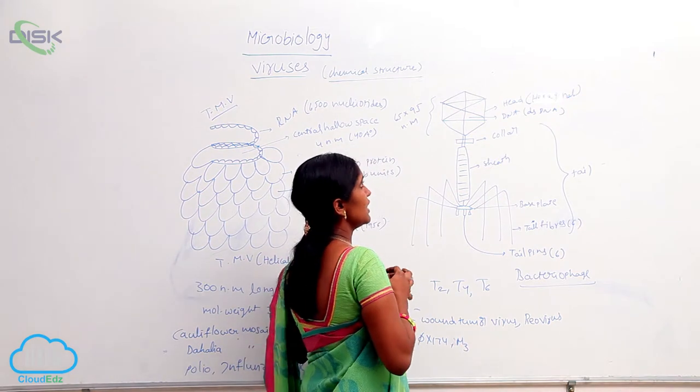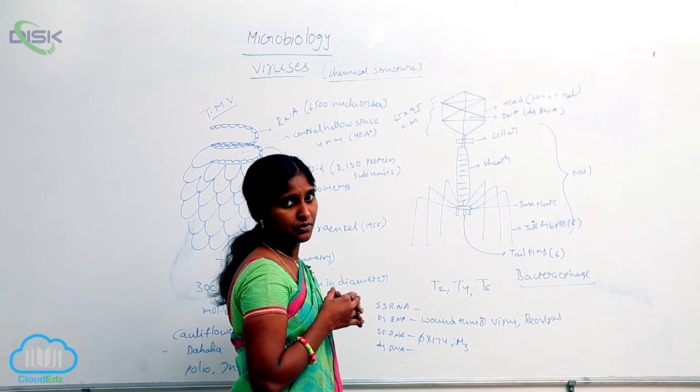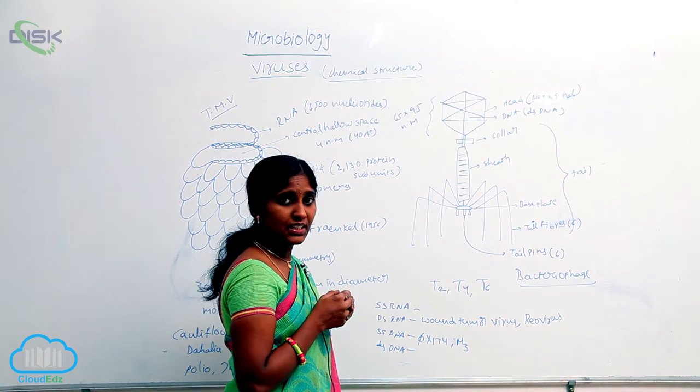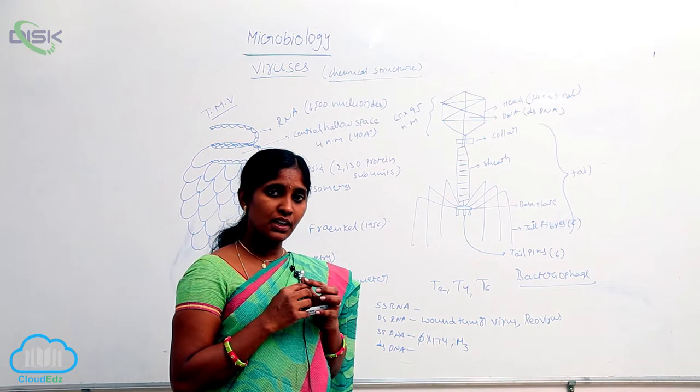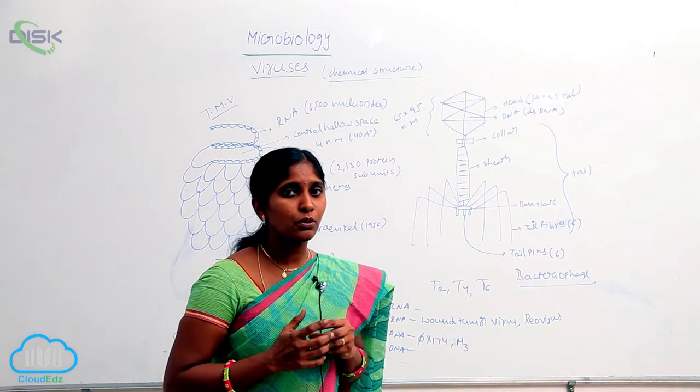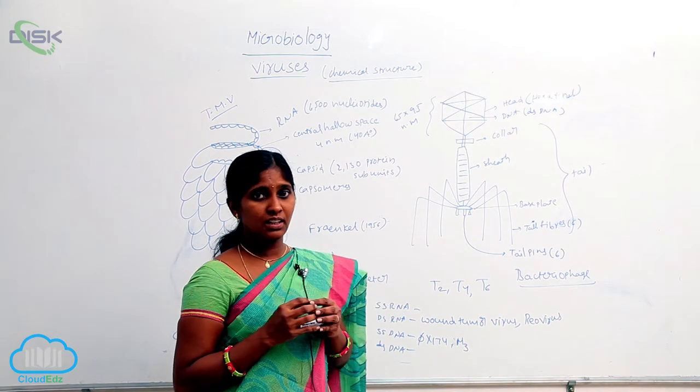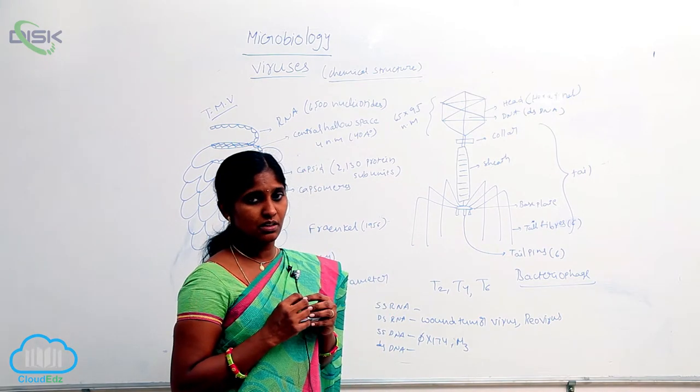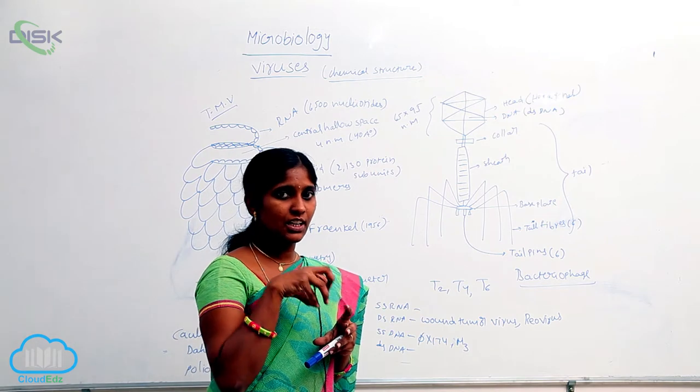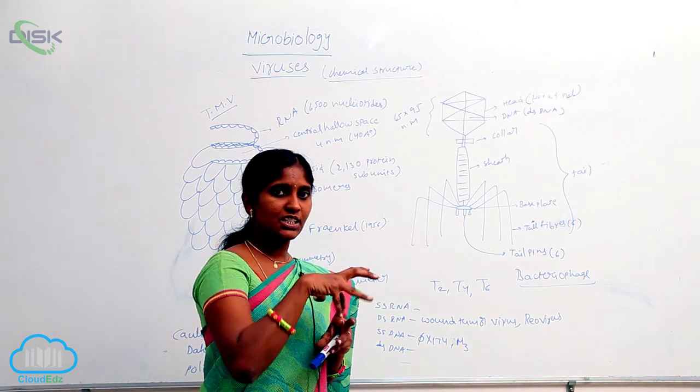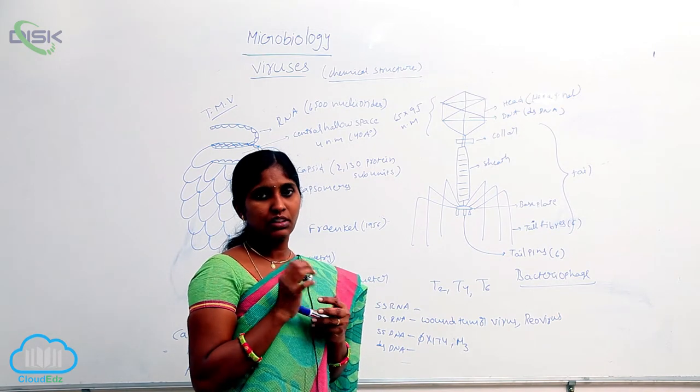And the size of the head is 65 into 95 nanometers. The head composed of nucleic acid as well as proteins. What type of nucleic acid is present here? Double-stranded DNA. DSDNA is present. Inside of the head, the DSDNA is present and it is covered by the hexagonal head that is protein coat, that is capsid.